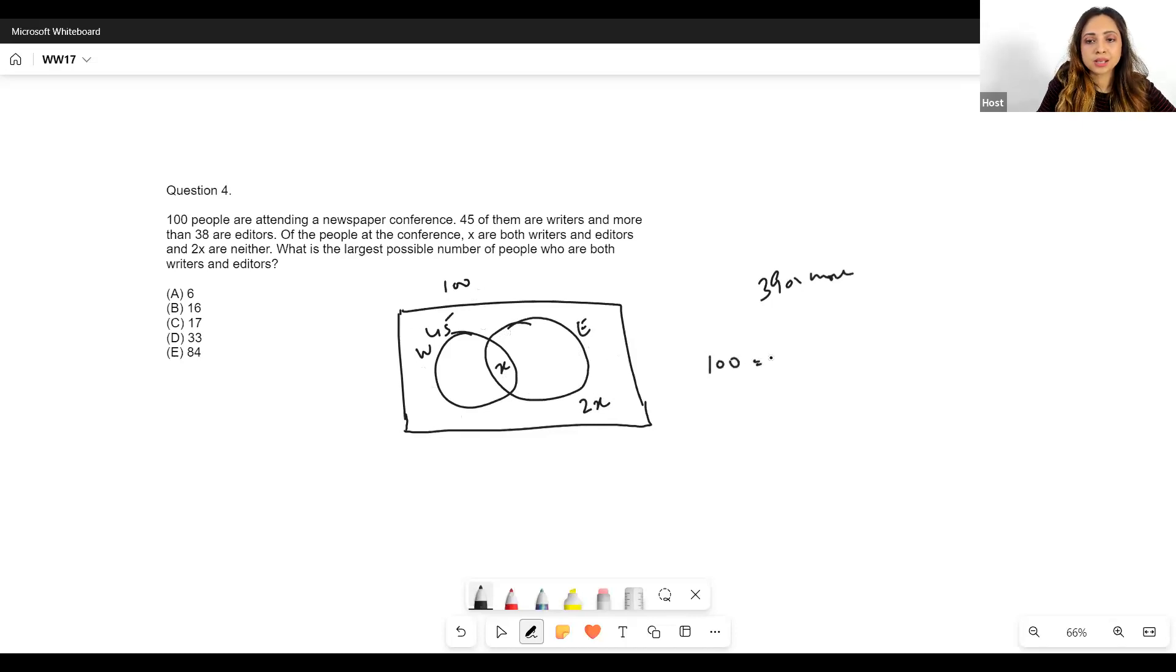So let me put this down. I'll say 100 is equal to what? 45 - plus 45 is my writer's circle, right?